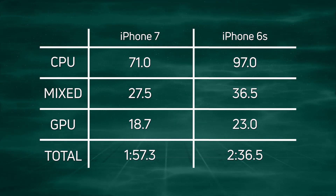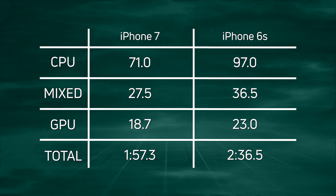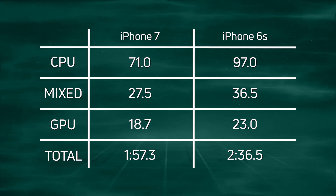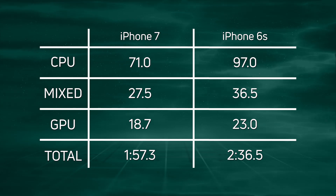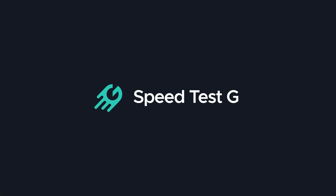Add up all those differences, and the iPhone 7 with the A10 Fusion came in first at 1 minute 57.3. My name is Gary Sims, this is SpeedTest G. I really hope you enjoyed this video. If you did, please give it a thumbs up and consider subscribing to the channel. If you like doing things on Twitter, there is a Twitter account: SpeedTest_G. Okay, I'll see you in the next one.